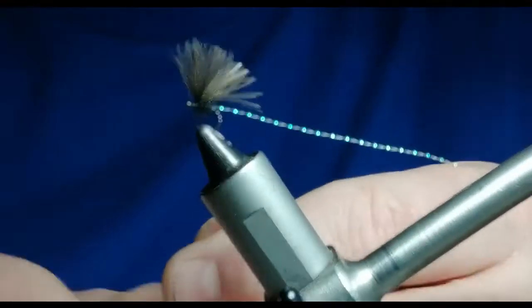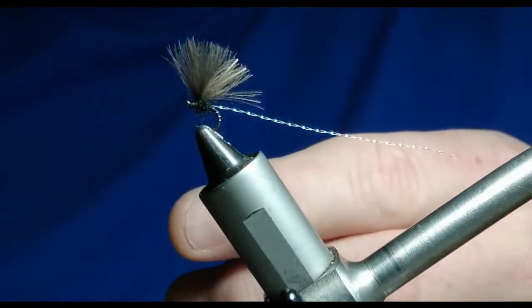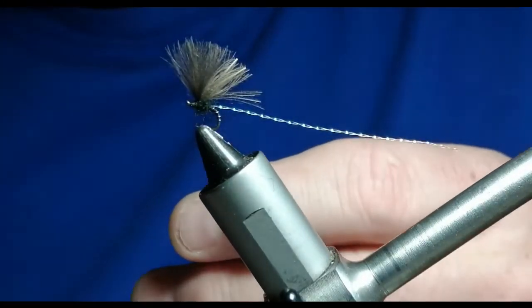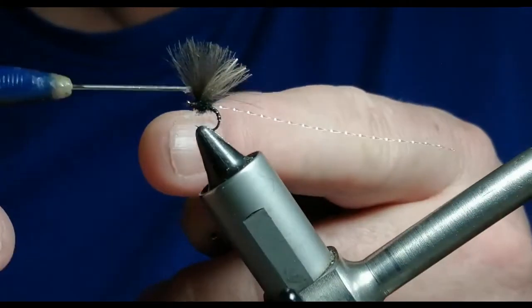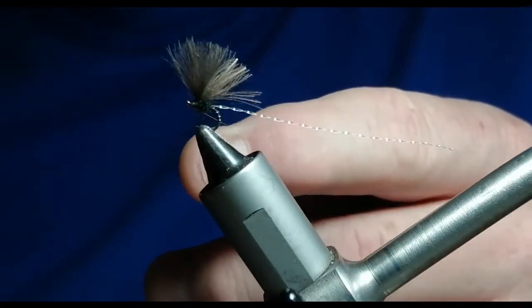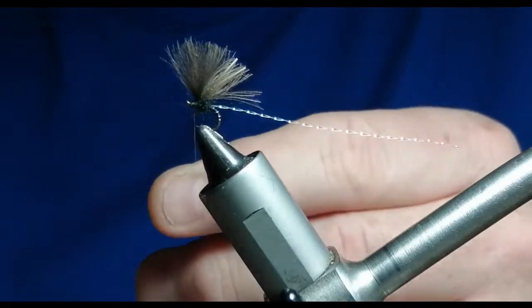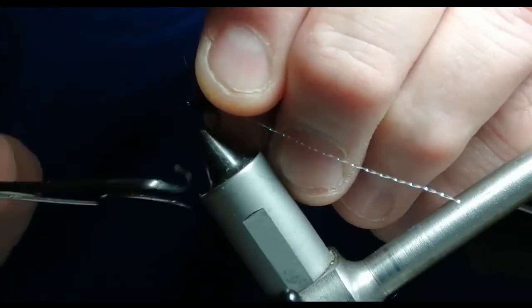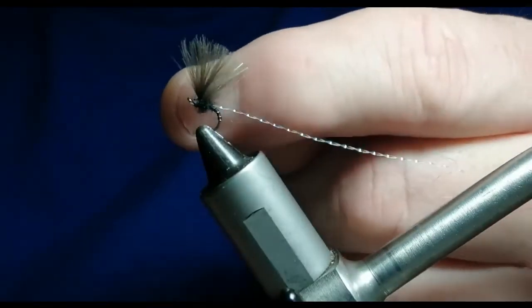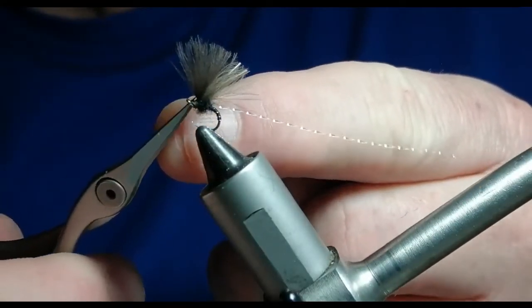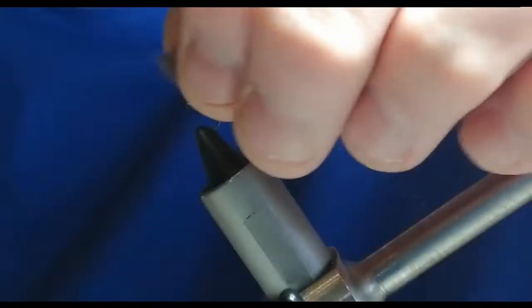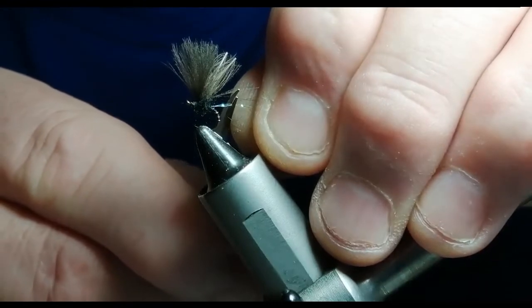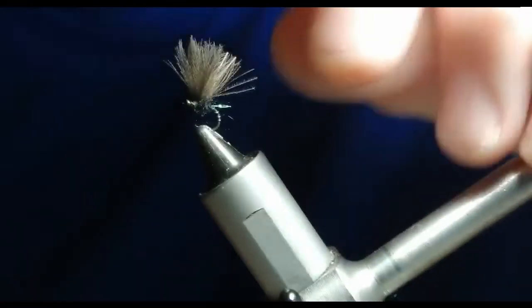Couple of wraps. I'm just going to put a tiny spot of super glue on the thread so we'll tie it off and hold it in. Now this I'll just take basically just past the end of the trigger point.